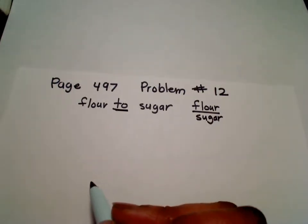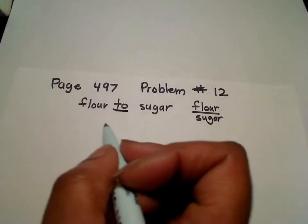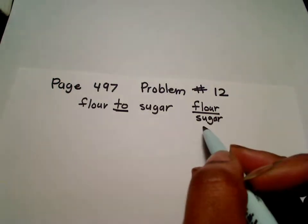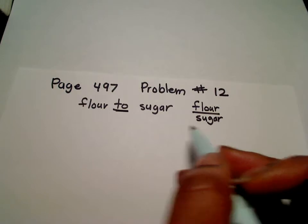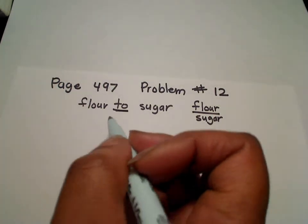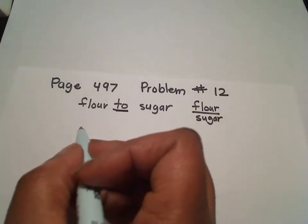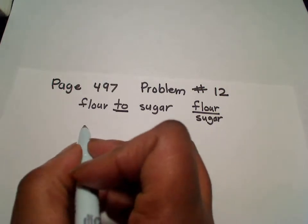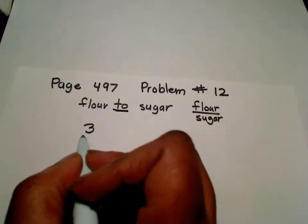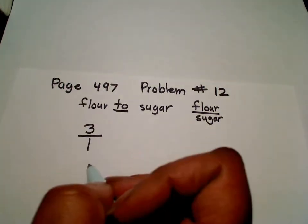So now, if you notice, they told us that we had two and one-fourth cups of flour, so let's set up our ratio. What we're going to do is set the problem so that we have for every three cups of flour, we have one cup of sugar.